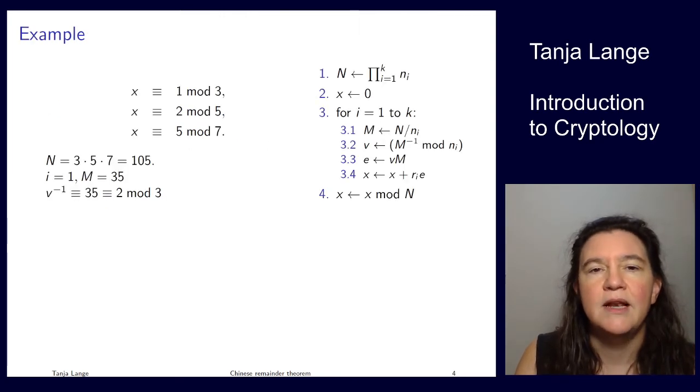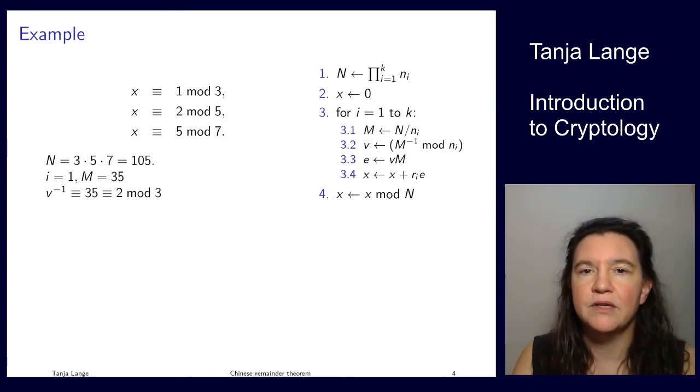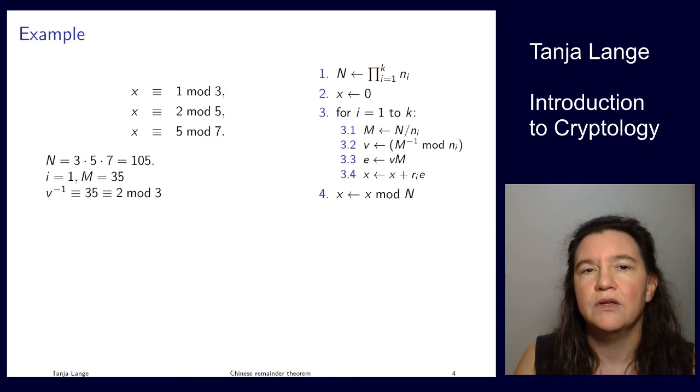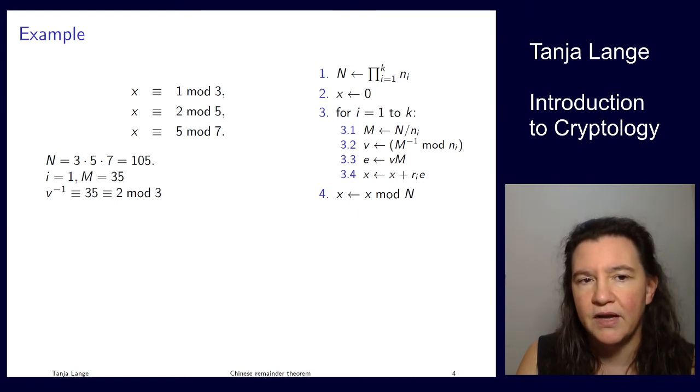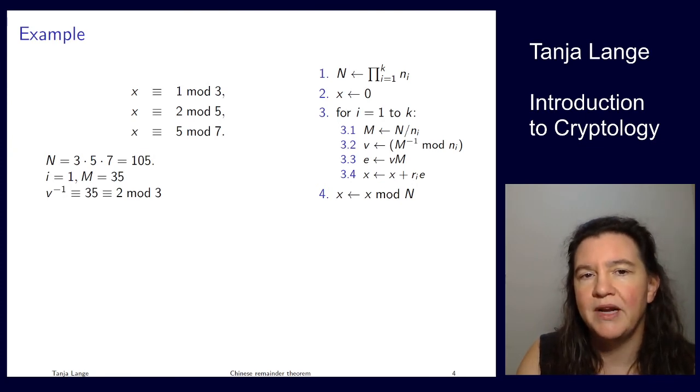Now to see an example of this, let's solve the system of equations where x ≡ 1 mod 3, x ≡ 2 mod 5, and x ≡ 5 mod 7. I put on the right the algorithm that we just ran into, except for the input and output. We're starting by putting N, the product of the moduli nᵢ: 3 × 5 × 7 = 105. Then we're running through the steps. For step 1, we're computing M, that's the remainder of the product, so just 5 × 7 = 35.